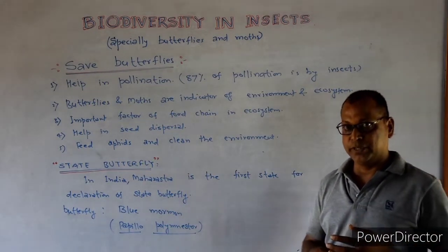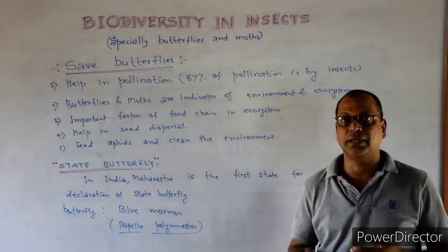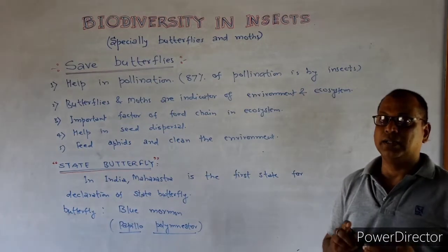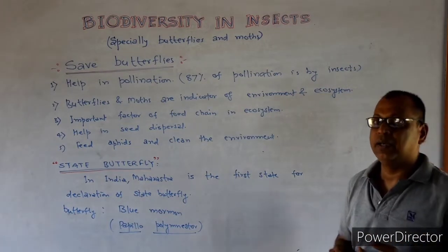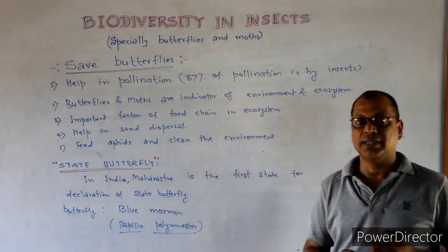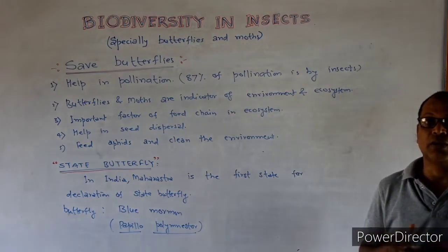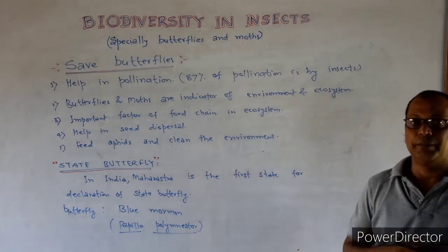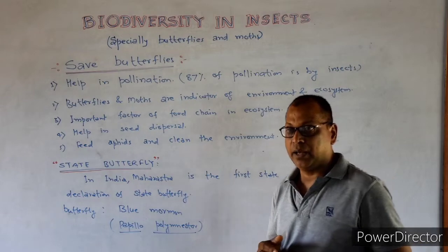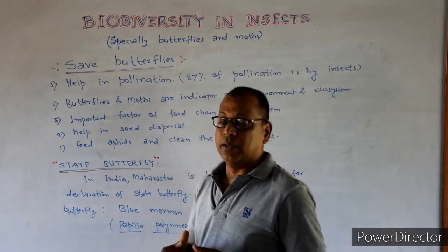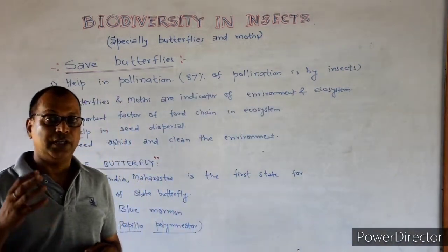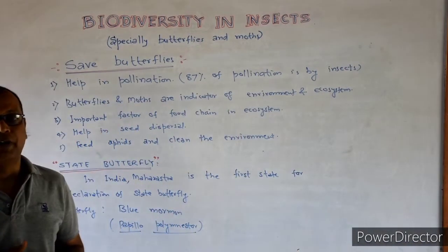In a state, there are symbolic representations — for example, in Jharkhand the state animal is the elephant and the state flower is a flower. Similarly, Maharashtra has declared a state butterfly.